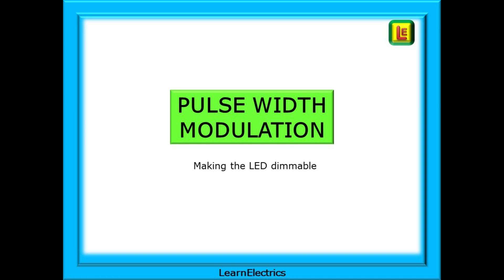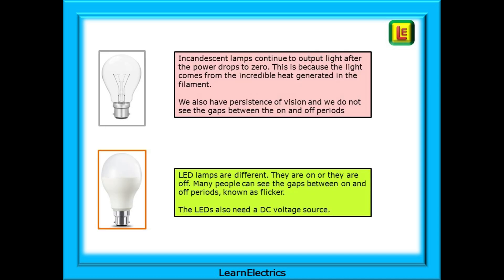Now we can look at making the LED lamps dimmable. This uses a technology called pulse width modulation. Incandescent lamps continue to output light after the power drops to zero because the light comes from the incredible heat generated in the filament. We also have persistence of vision, and so we do not see the gaps between the on and off periods. LED lamps, on the other hand, are different — they are either on or they are off. And some people can see the gaps between the on and off periods, known as flicker.